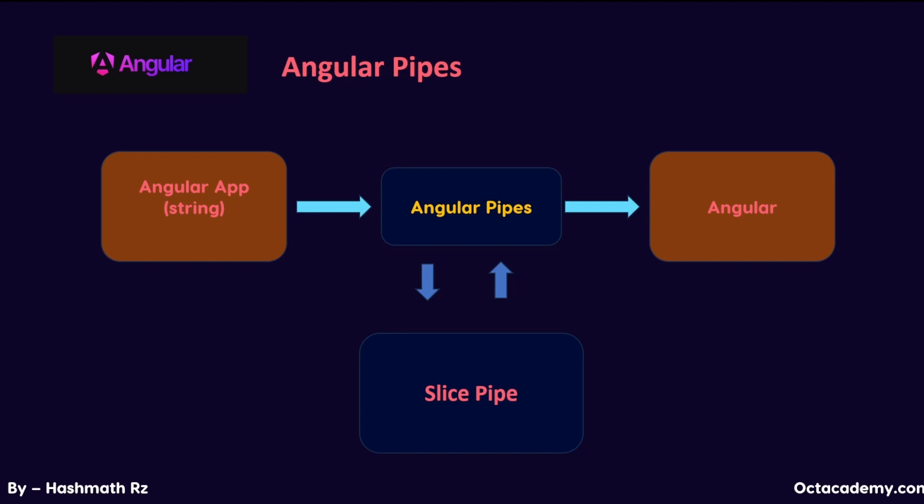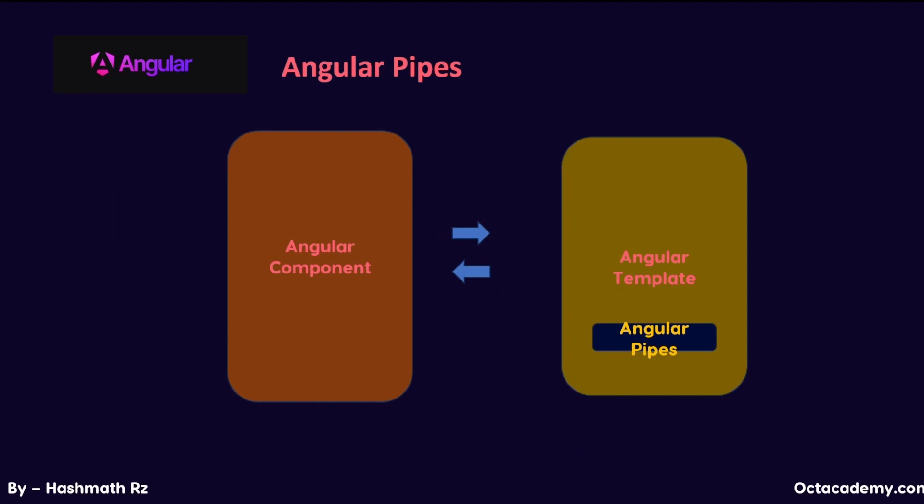You might be thinking: why not just handle data transformation in the component's TypeScript code? Well, the beauty of pipes is that they keep your templates clean and concise. Instead of writing a bunch of logic in your component to handle data formatting, you can just use a pipe in your template, making your code easier to read and maintain. Angular pipes also help you separate concerns — your component's job is to manage data and logic, while pipes handle how that data is presented. This separation makes your code more modular and easier to test.